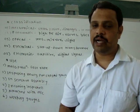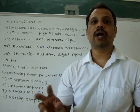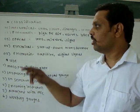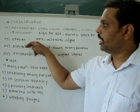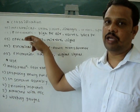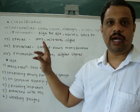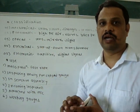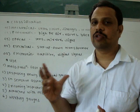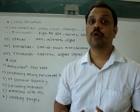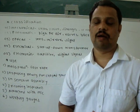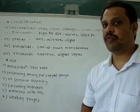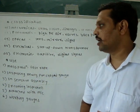One more type is the combined comparator. In a combined comparator we use any two comparators together which give a better result — for example, an opto-mechanical comparator. This is the classification of comparators.